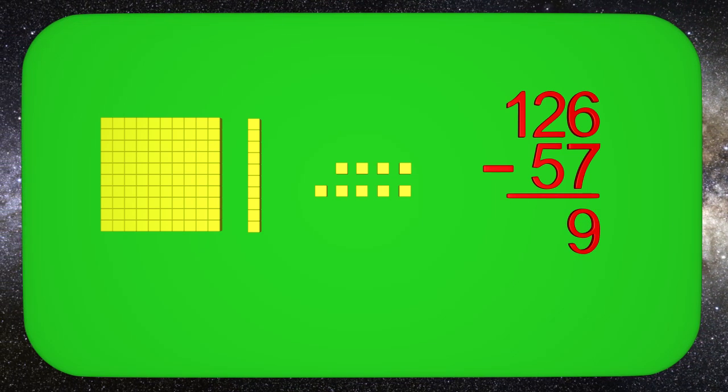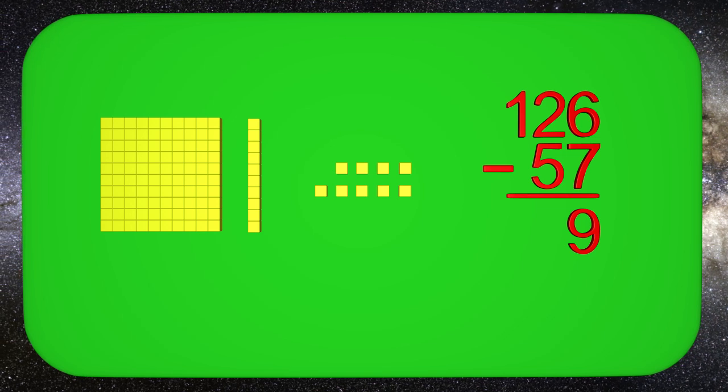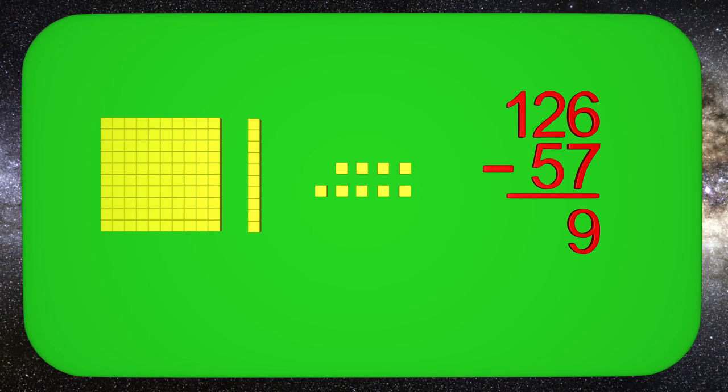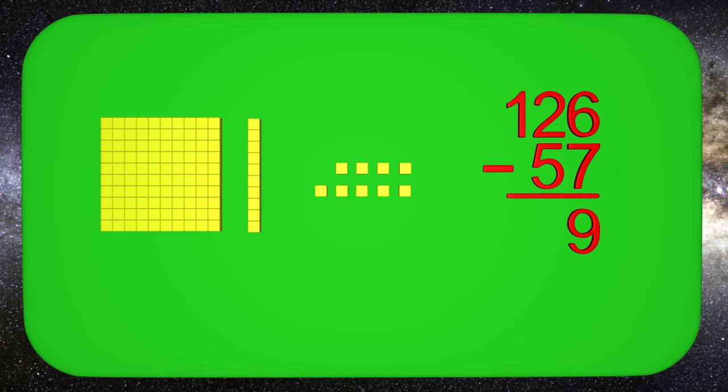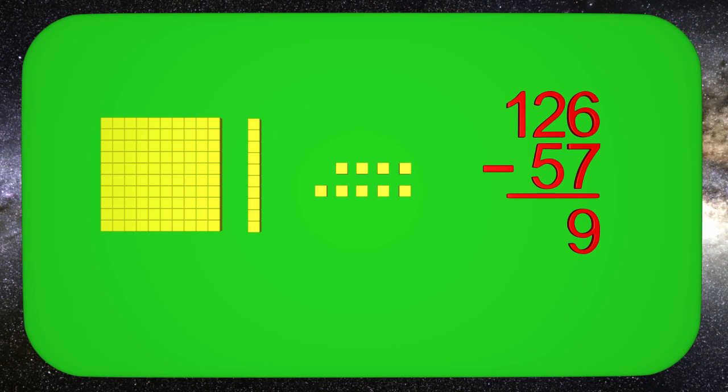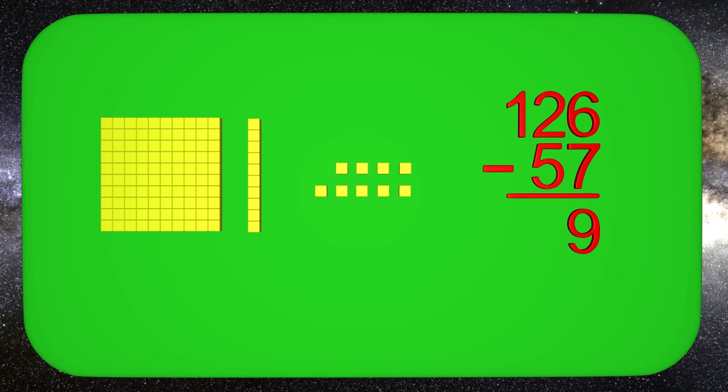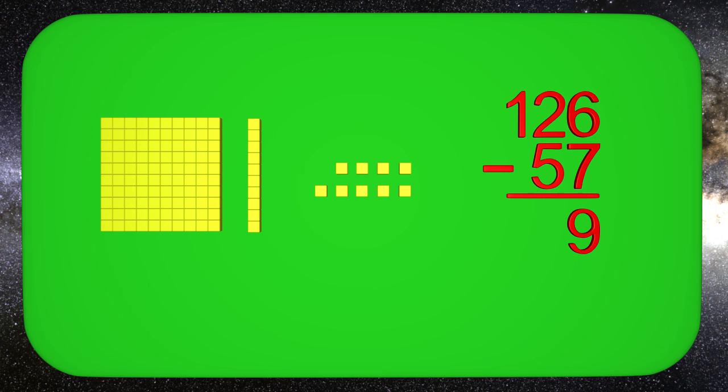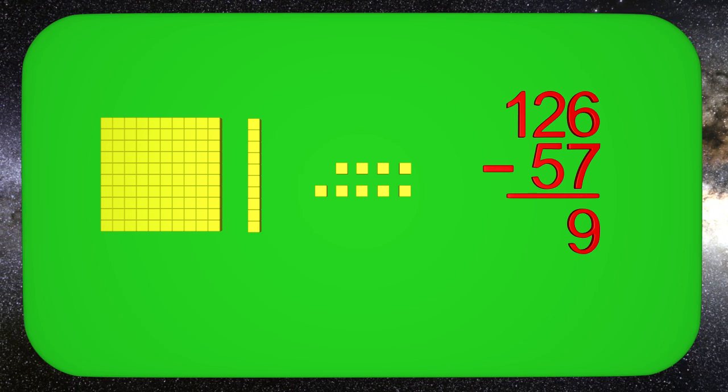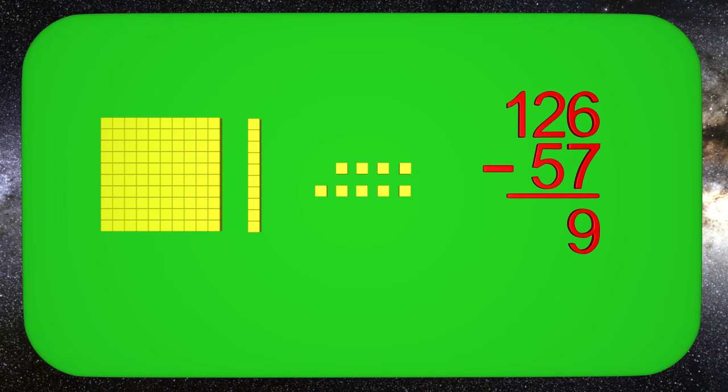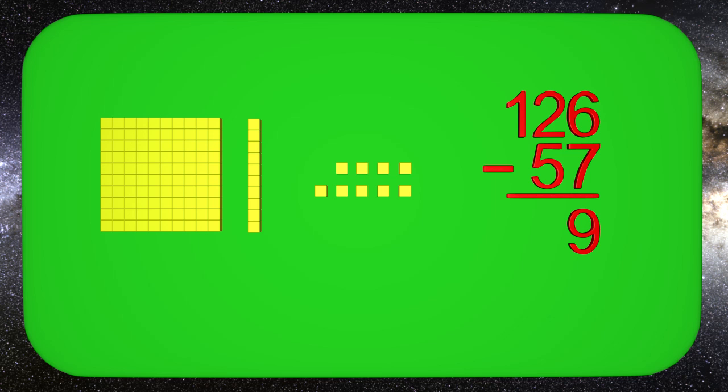Now we move on to the tens. It says that we have 2 tens, but I only see 1. Do you know what happened? I remember we traded one of the tens blocks to get 10 ones. So let's cross out the 2 and put 1.